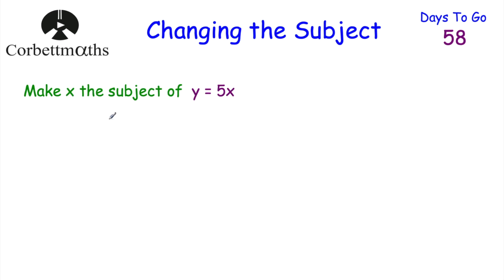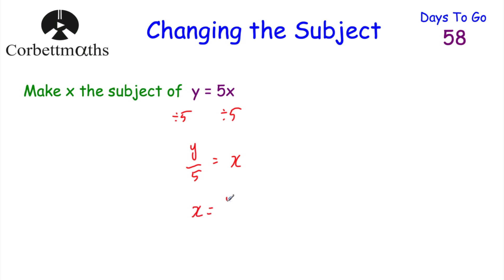Let's have a look at our next question. This time we've been asked to make X the subject of Y equals 5X. Feel free to press pause and try this question. So we want to make X the subject — we've got 5 times X. We don't want the multiplied by 5, so let's divide the left hand side by 5 and the right hand side by 5. Y divided by 5 we write as Y over 5. On the right hand side we had 5 times X; we divided by 5 so we're just left with X. So X equals Y over 5, that is Y divided by 5.